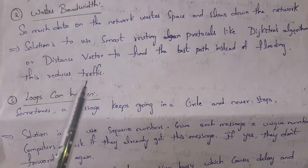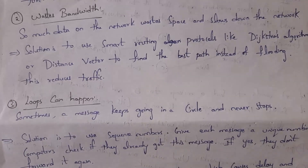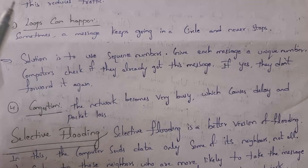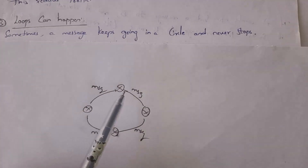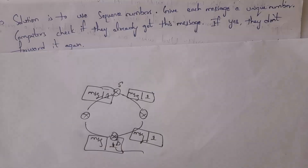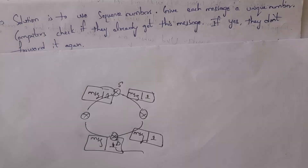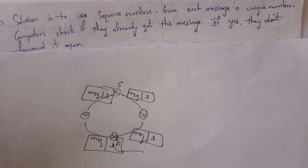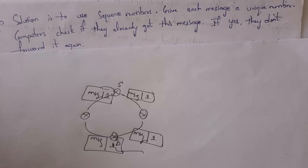Instead of using threading, you can use techniques like Dijkstra's algorithm or distance vector routing algorithm. The third disadvantage is that loops can happen — sometimes messages keep going in a circular manner and never stop. To overcome this problem, we assign a sequence number to our messages. Whenever the destination router receives the data, it uses the sequence number to identify whether the message has already been received or not.